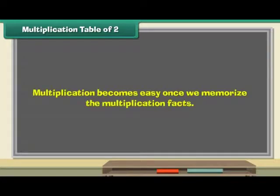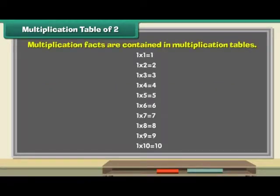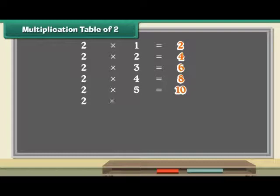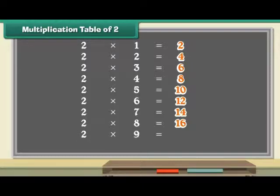Multiplication table of 2. Multiplication becomes easy once we memorize the multiplication facts. Multiplication facts are contained in multiplication tables. Let us start with a multiplication table of 2. 2 ones are 2. 2 twos are 4. 2 threes are 6. 2 fours are 8. 2 fives are 10. 2 sixes are 12. 2 sevens are 14. 2 eights are 16. 2 nines are 18. 2 tens are 20.